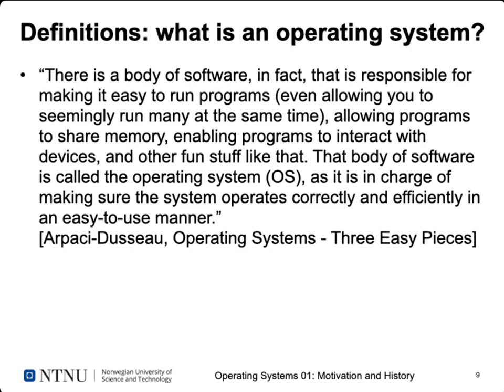The OSTEP book turns the problem on its head: there is a body of software responsible for making it easy to run programs, allowing you to seemingly run many at the same time, allowing programs to share memory, enabling programs to interact with devices, and other stuff like that. That body of software is called the operating system, as it is in charge of making sure the system operates correctly and efficiently in an easy-to-use manner. This definition combines both Tanenbaum's and Stallings's views.